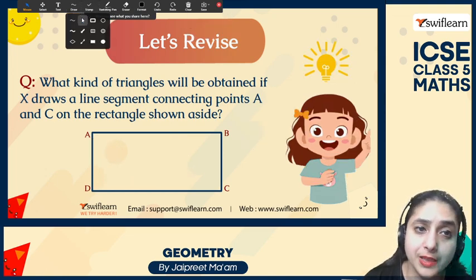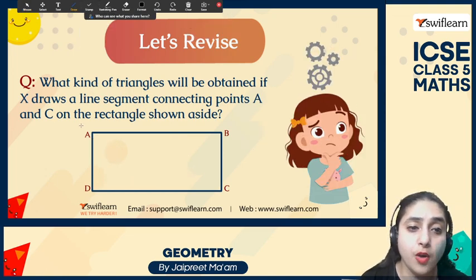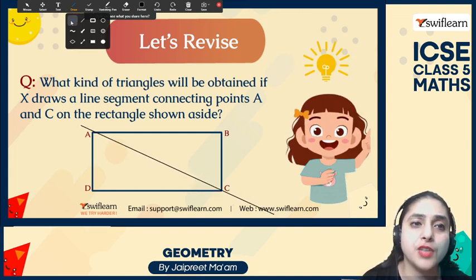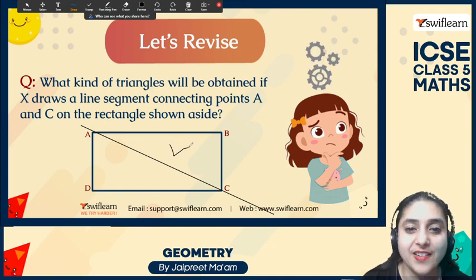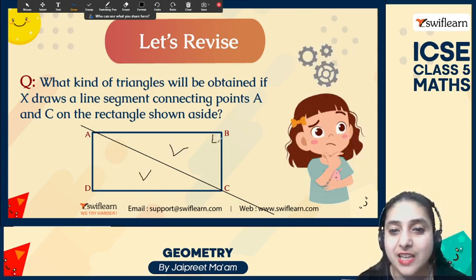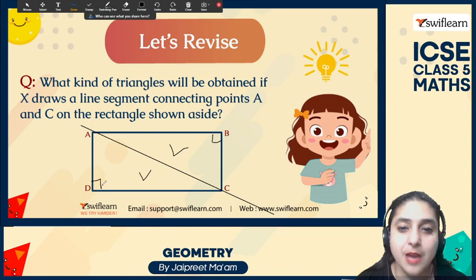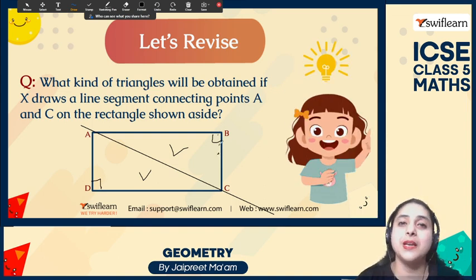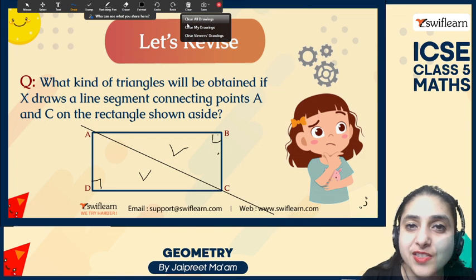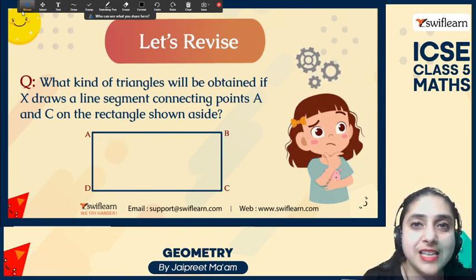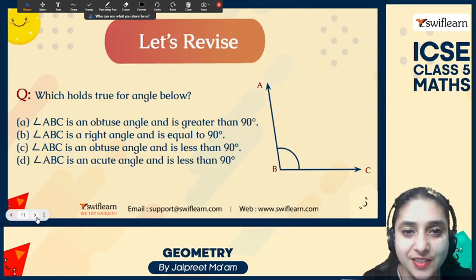Let's look at one more example. If we draw lines joining A and C, which kind of triangles are they forming? They are forming right angle triangles, because the lines are making right angles with the base and perpendicular. The sum of the angles in right triangles is equal to 90 degrees.